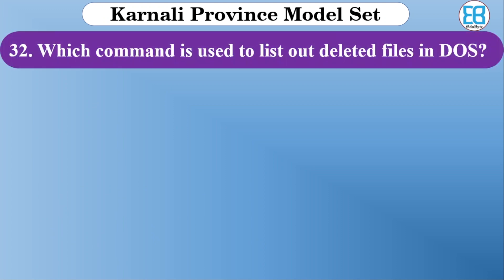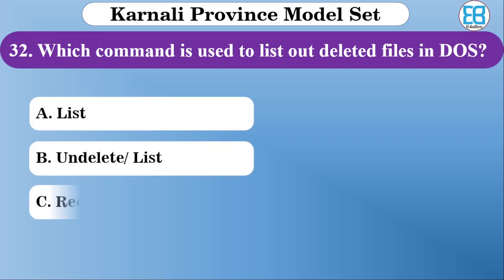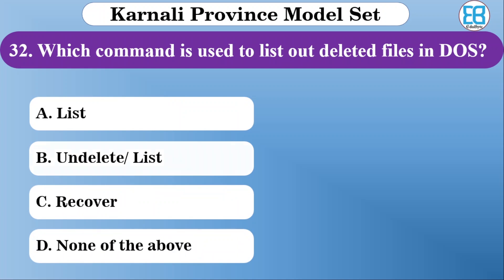Which command is used to list out deleted files in DOS? The options are list, undelete list, and recover. The correct option is undelete — the UNDELETE command lists and recovers deleted files.